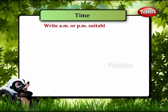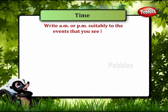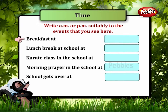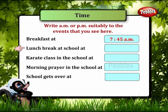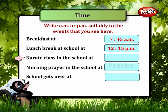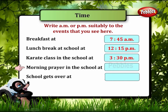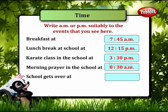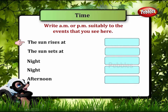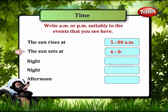Write A.M. or P.M. suitably to the events that you see here. Breakfast at 7:45 A.M. Lunch break at school at 12:15 P.M. Karate class in the school at 3:30 P.M. Morning prayer in the school at 8:30 A.M. School gets over at 4:00 P.M. Sun rises at 5:00 A.M. The sun sets at 6:00 P.M.